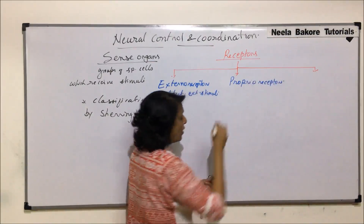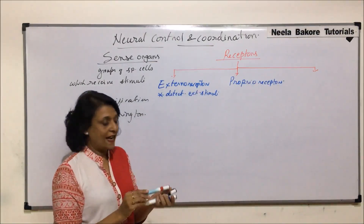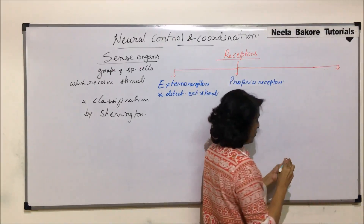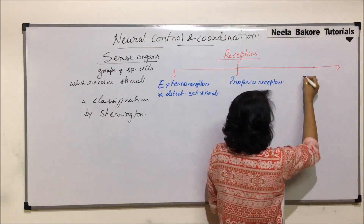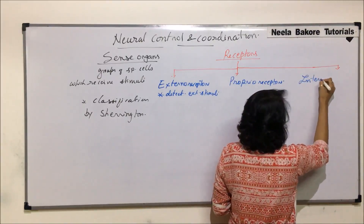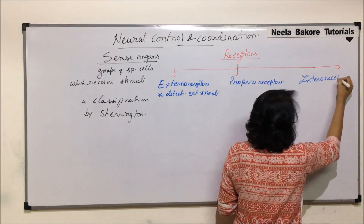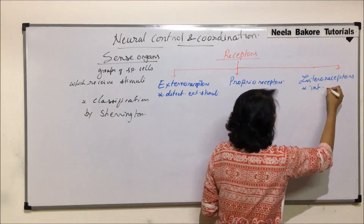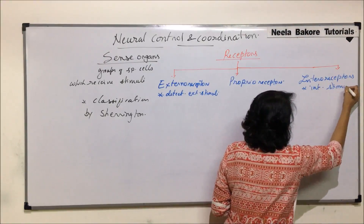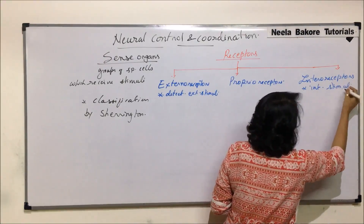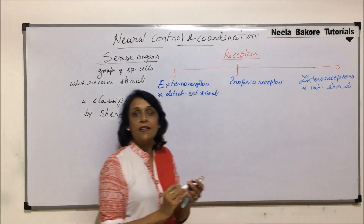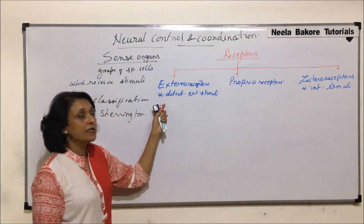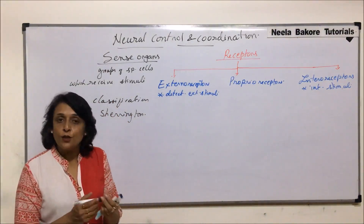Proprioreceptors are normally located in the tendons or ligaments. The third ones are known as interoceptors — interoceptors respond to internal stimuli. That means if some change takes place inside the body or inside an organ, these receptors are going to detect it. So let us take the external receptors first.